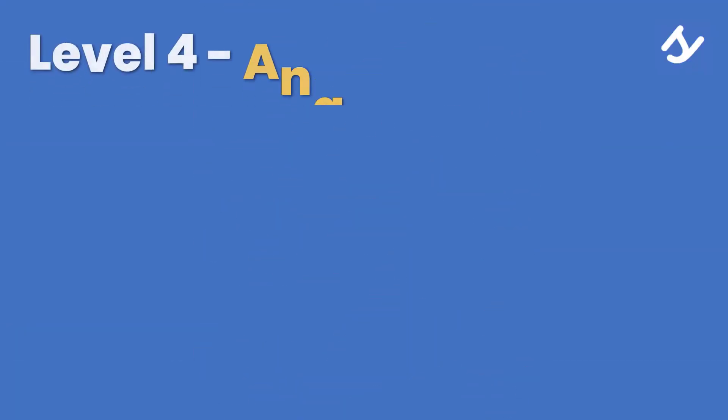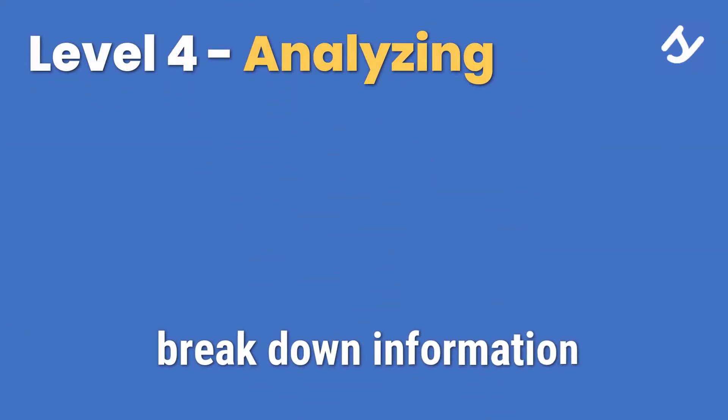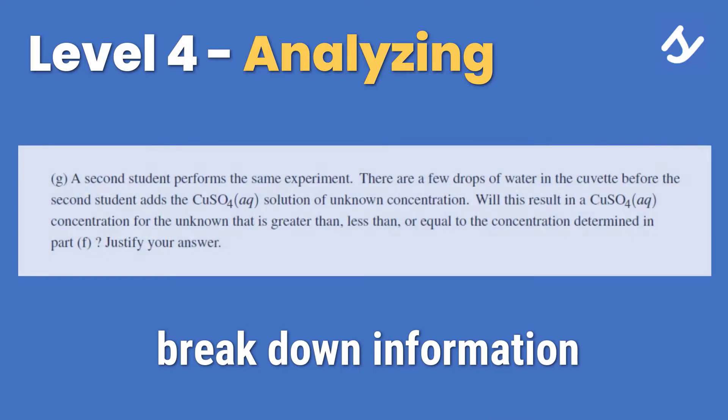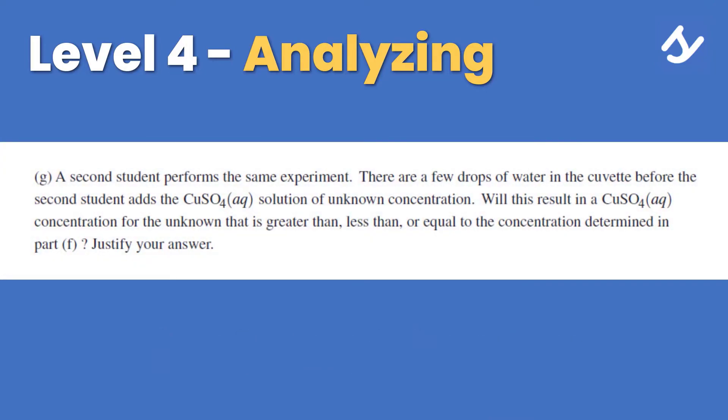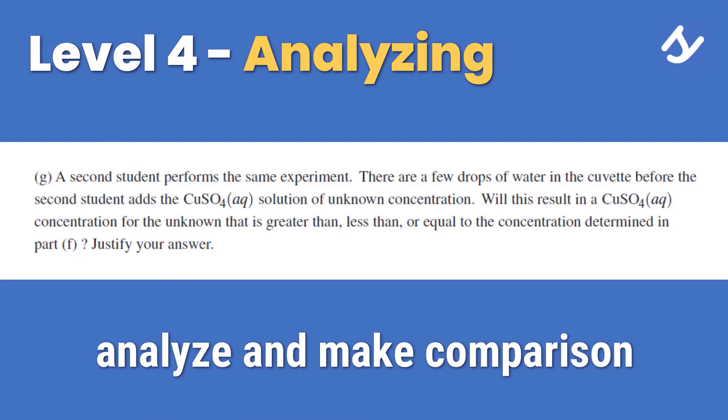Next is level 4, analyzing. The questions at this level test your ability to break down information into parts. You're expected to be able to analyze between options and determine how they are interrelated. Take this question for example. You're given two scenarios and asked to figure out the impact of the second scenario when compared to the first.